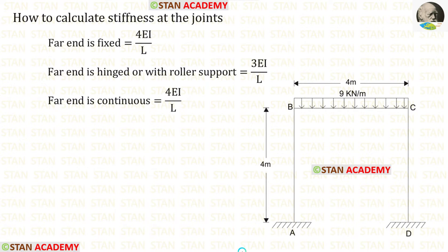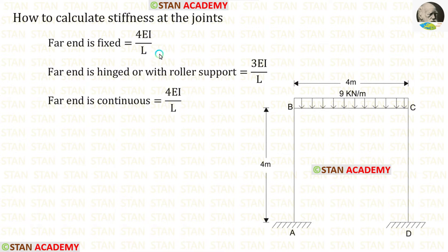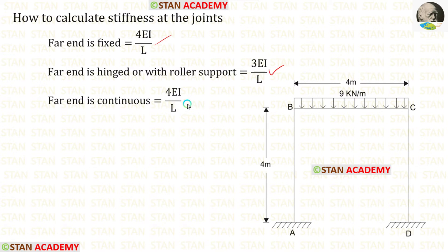In Kani's method, we have to find the rotation factor. To find the rotation factor, we have to calculate the stiffness. If the far end is fixed, the formula is 4EI upon L. If the far end is hinged or with roller support, the formula is 3EI upon L. If the far end is continuous, the formula is 4EI upon L.